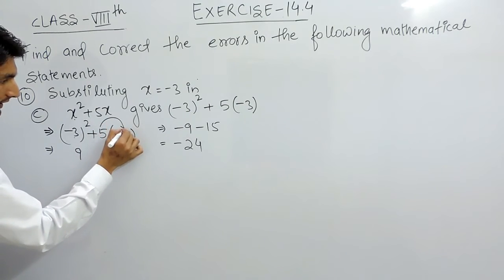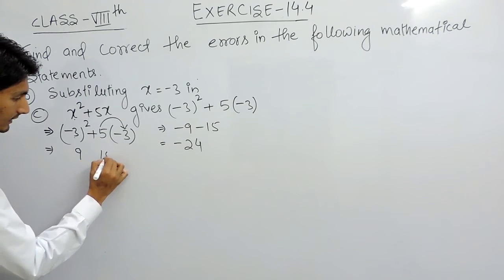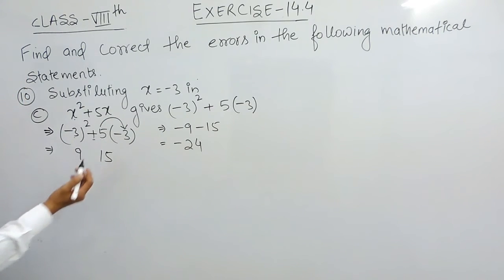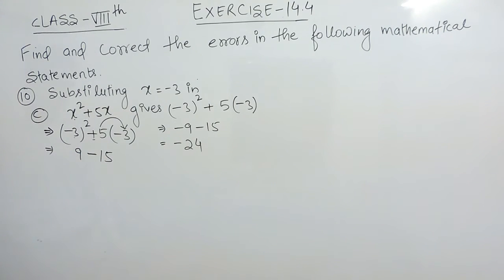Now this is the bracket, so to open it I have to multiply. 5 into 3 is 15, and I have already told you that plus minus when multiplied should give minus 15.